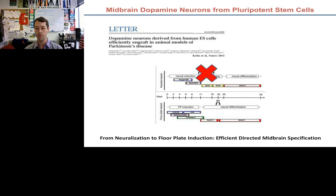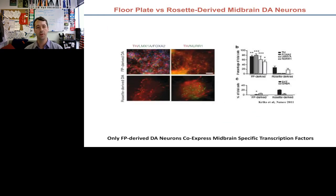The floor plate-derived dopaminergic neurons showed LMX1A and FOXA2 expression, whereas the old rosette-based technique gave only TH-positive cells without LMX1A and FOXA2 — those two critical transcription factors important in the floor plate where midbrain dopamine neurons are born. Both techniques gave Nurr1-positive, TH-positive cells, so while the old strategy looked like it was making true dopamine neurons, it was missing the full signaling story. Importantly, the floor plate strategy also avoided making the wrong cell types — serotonergic and GABAergic neurons implicated in problems with fetal grafts.